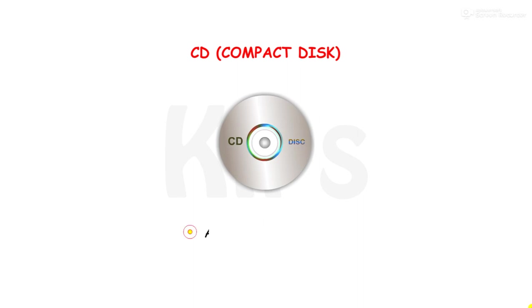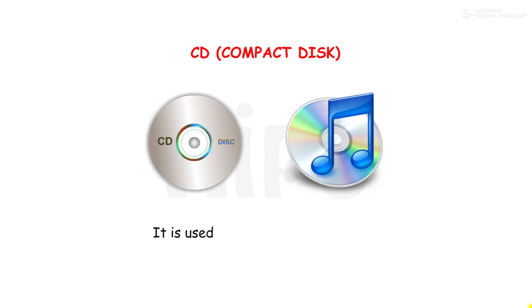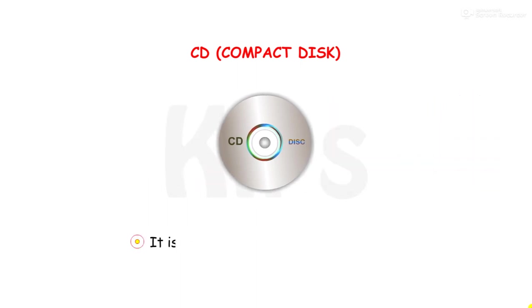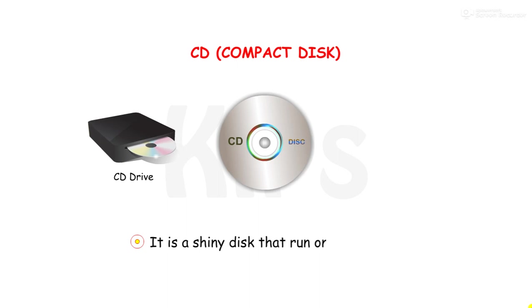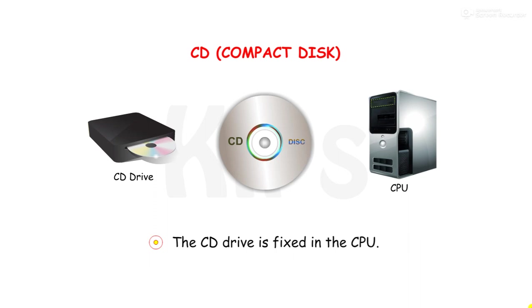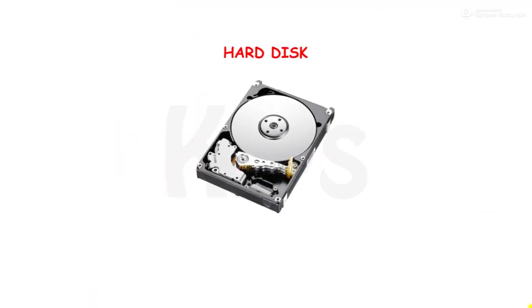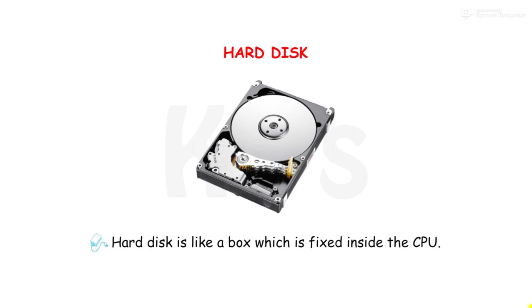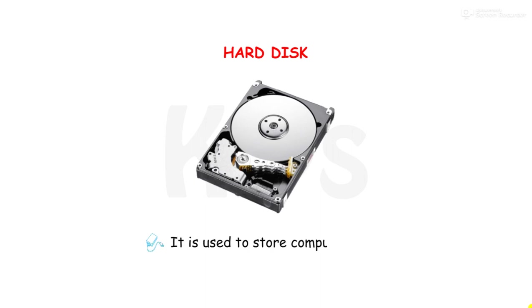A CD is round in shape. It is used to store a lot of information. It is a shiny disk that runs on a CD drive. The CD drive is fixed in the CPU. A hard disk is like a box which is fixed inside the CPU, and it is used to store computer data.